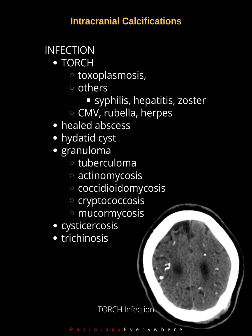Infection calcifications include TORCH infections: toxoplasmosis, syphilis, hepatitis, zoster, CMV, rubella, herpes. Also: healed abscess, hydatid cyst, granuloma, tuberculoma, actinomycosis, coccidioidomycosis, cryptococcosis, mucormycosis, cysticercosis, and trichinosis.